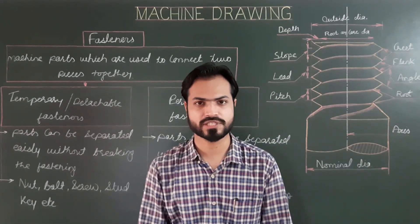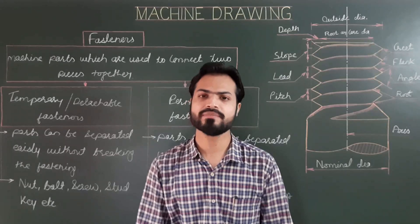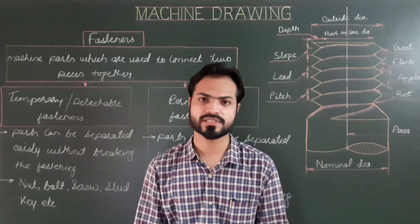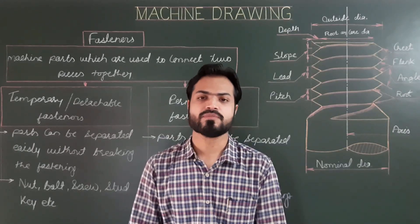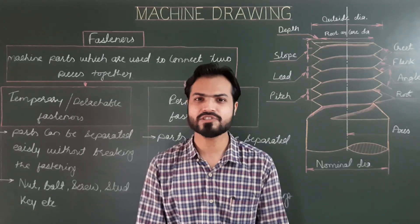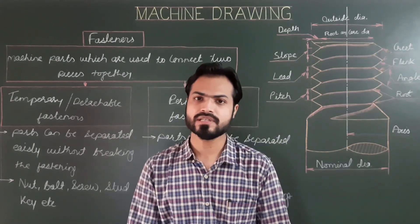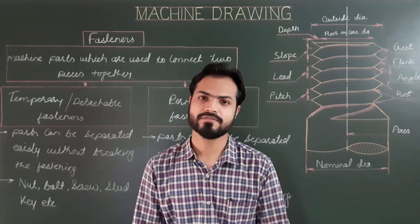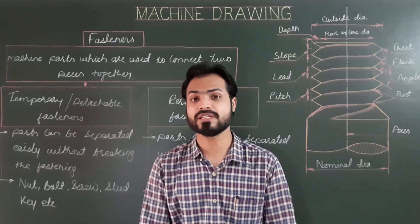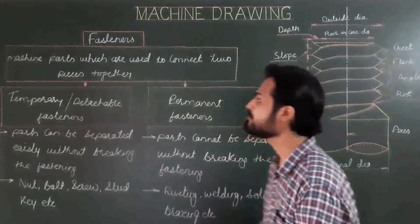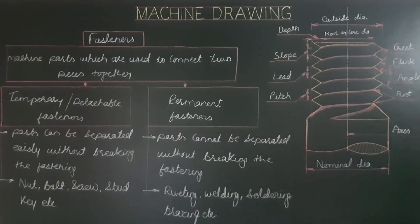The process of joining different parts of a machine or engineering product is called fastening or the fastening process. Fasteners are machine parts which are used to connect two pieces together. There are two types of fasteners: temporary and permanent.